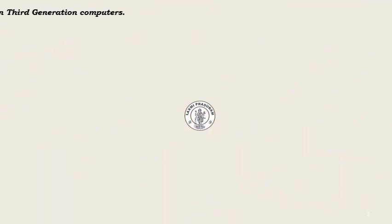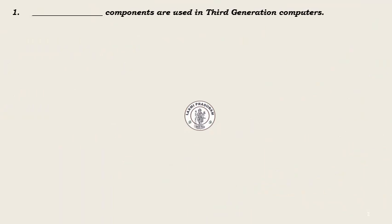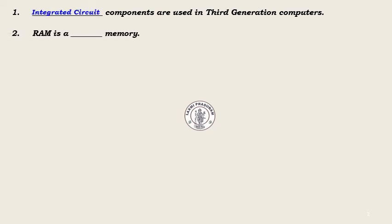Fill in the blanks. Question 1: Dash components are used in third generation computers. Answer: Integrated circuits. Question 2: RAM is a dash memory. Answer: Volatile.